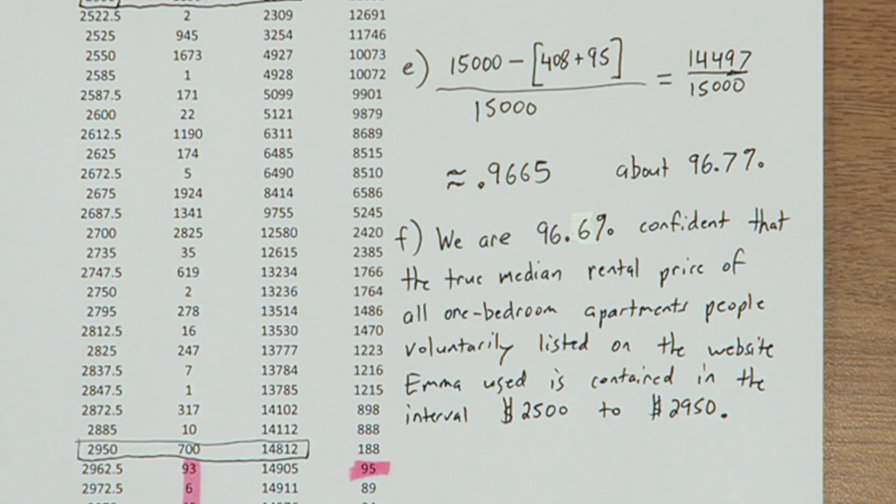Now, one thing you'll notice is I did round the confidence level down to 96.6. Whenever you have a confidence level, it's always a good idea to round down just to make sure you're actually that confident.